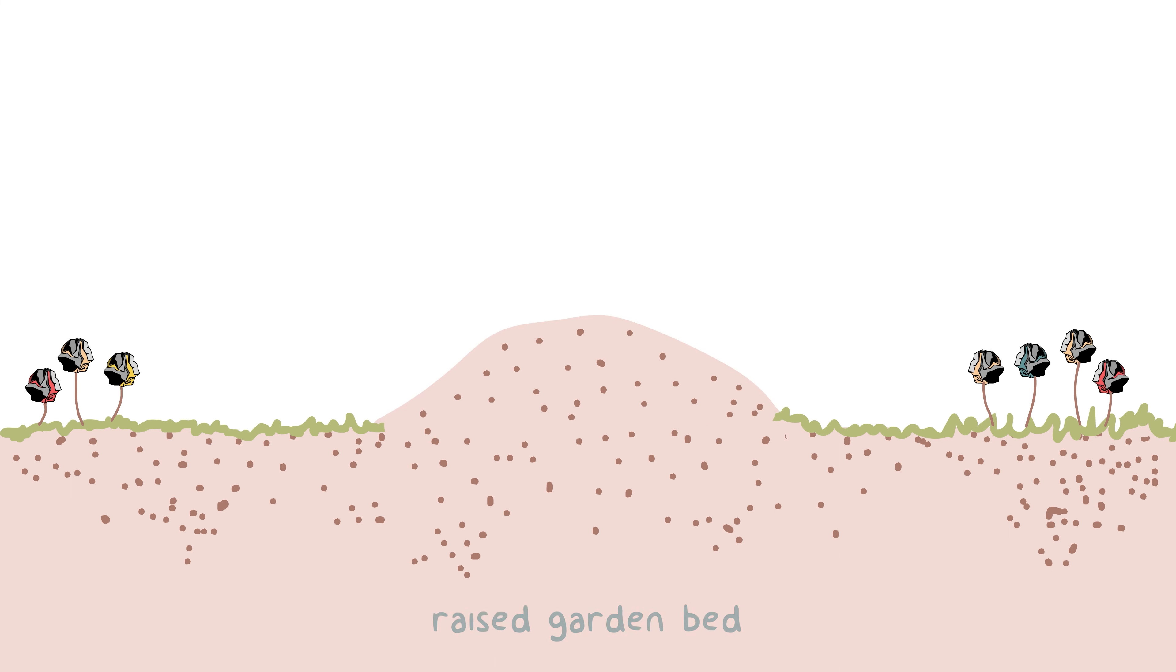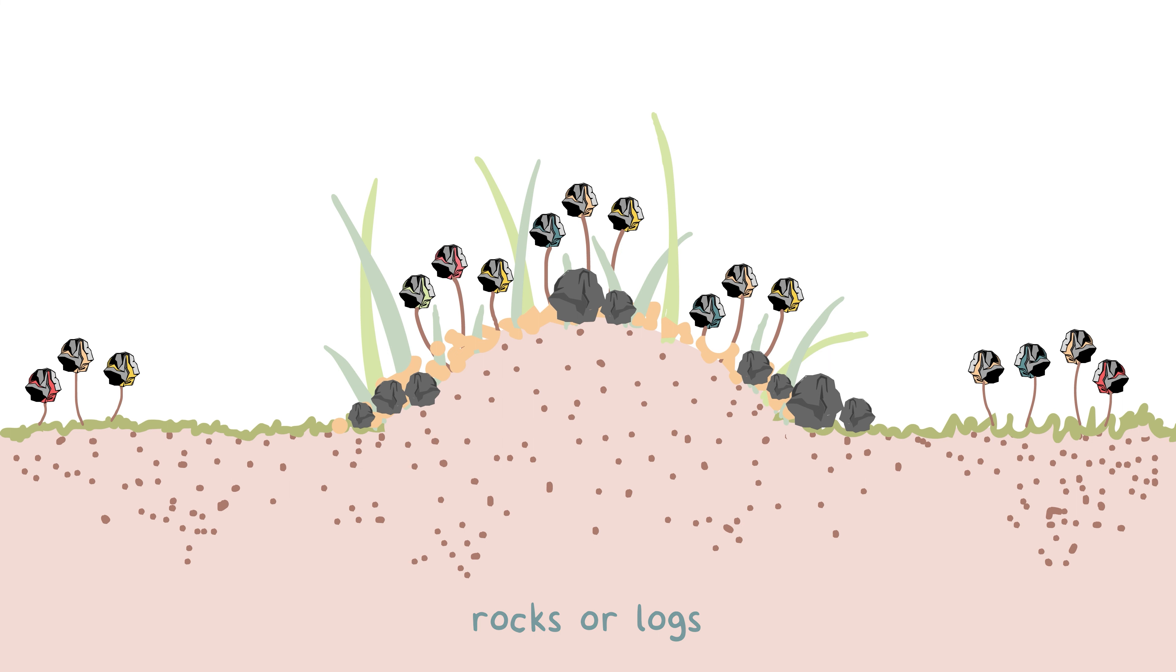First, build a small raised garden bed. Next, plant some native perennials and grasses onto it. Give it a good layer of mulch. Lastly, add some large rocks or logs for our hideouts.